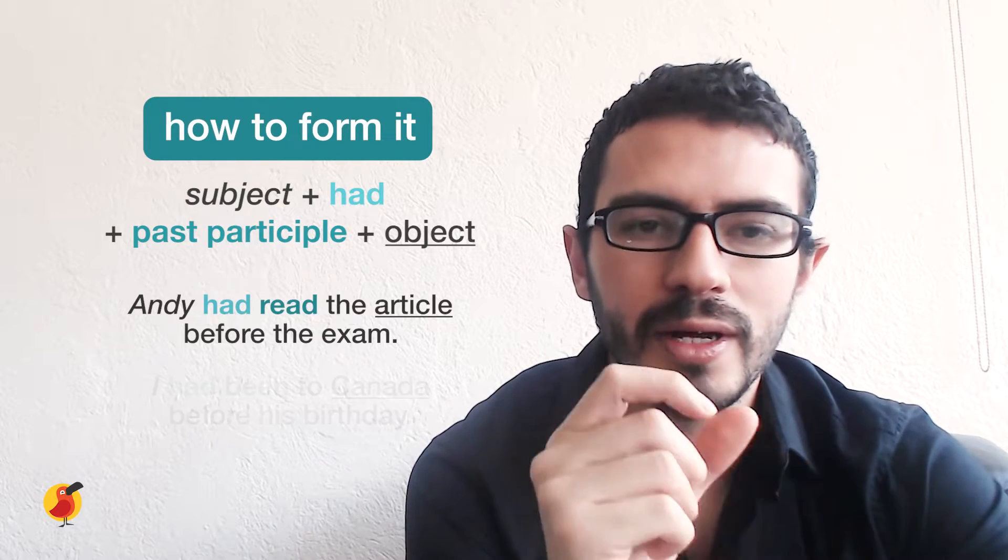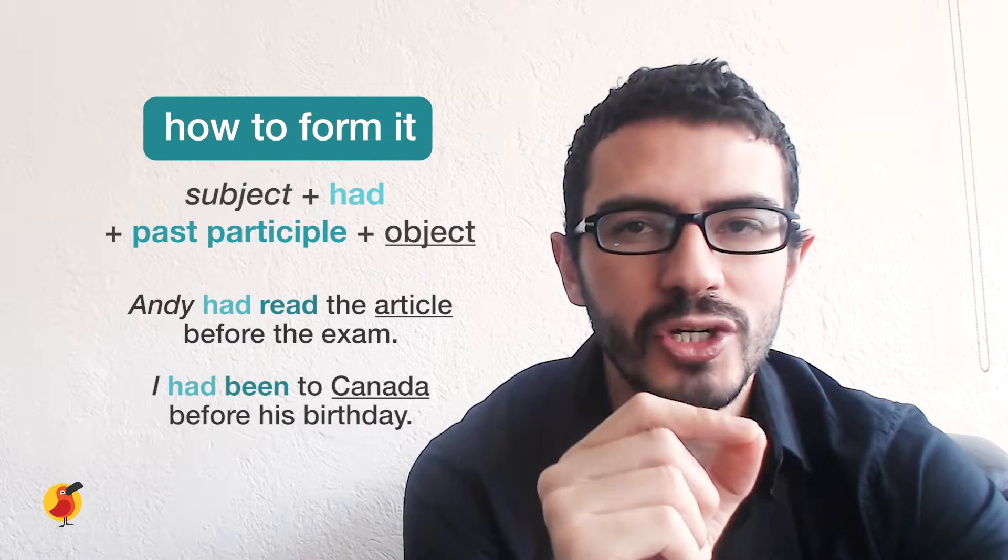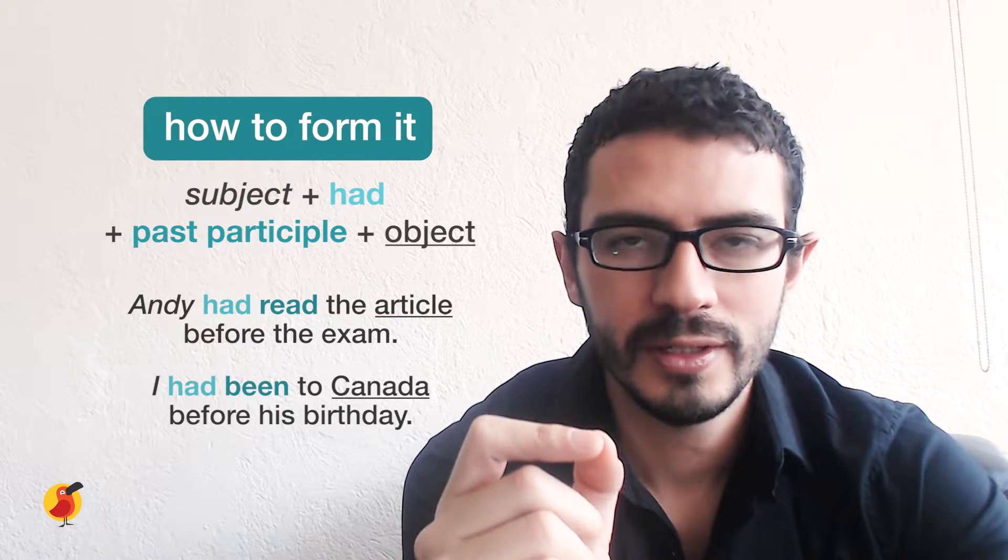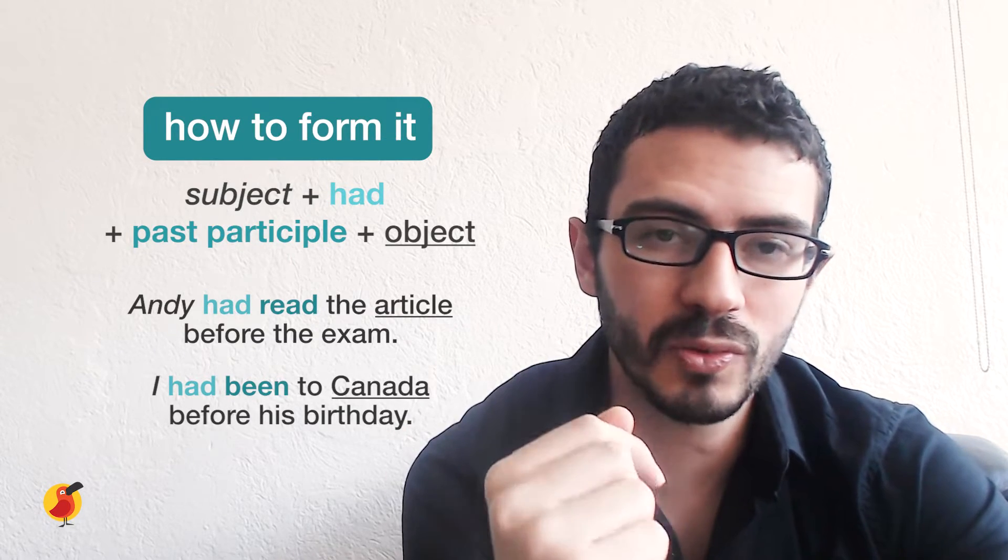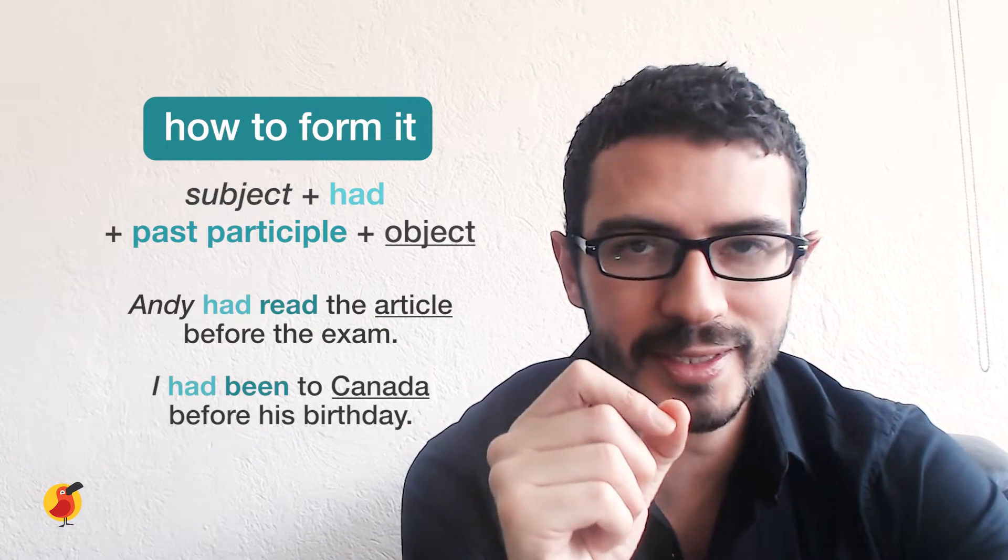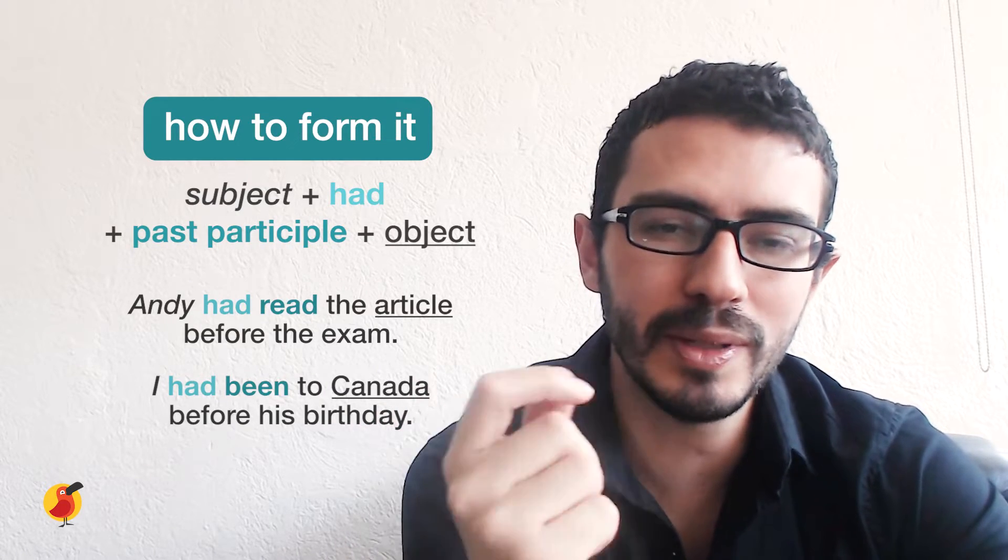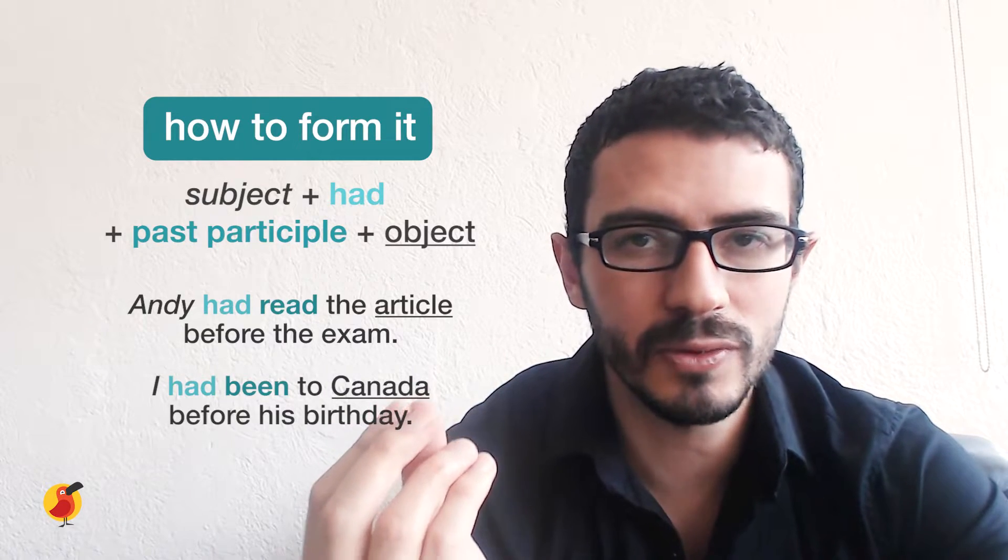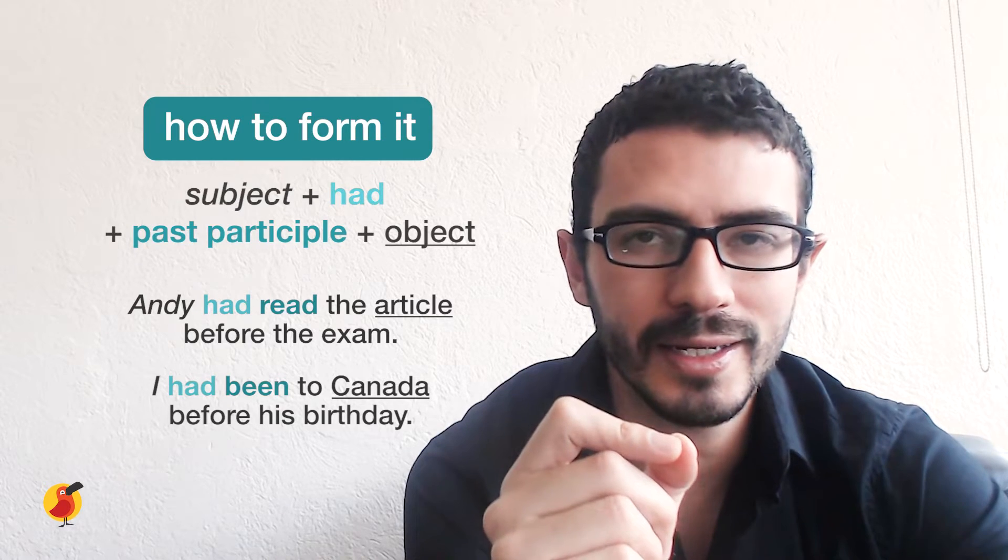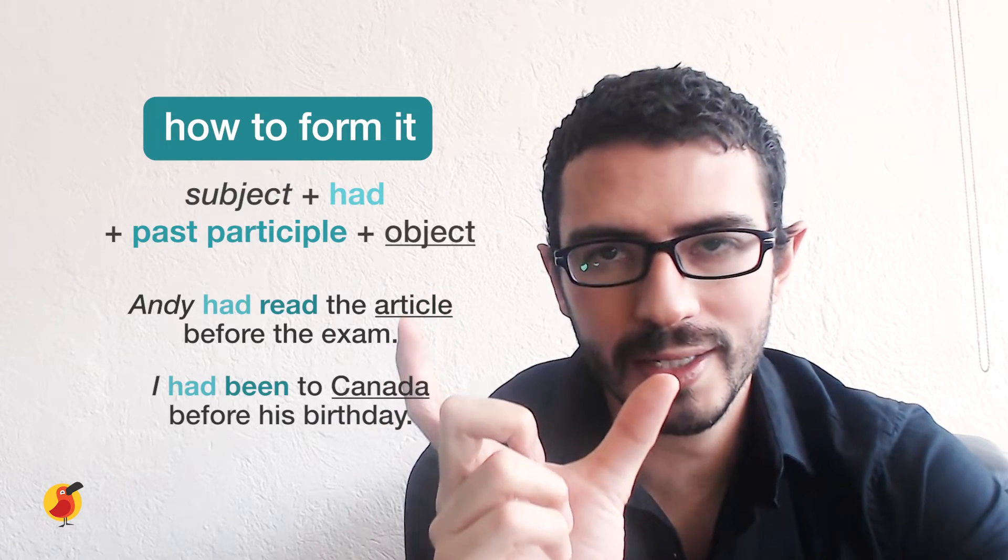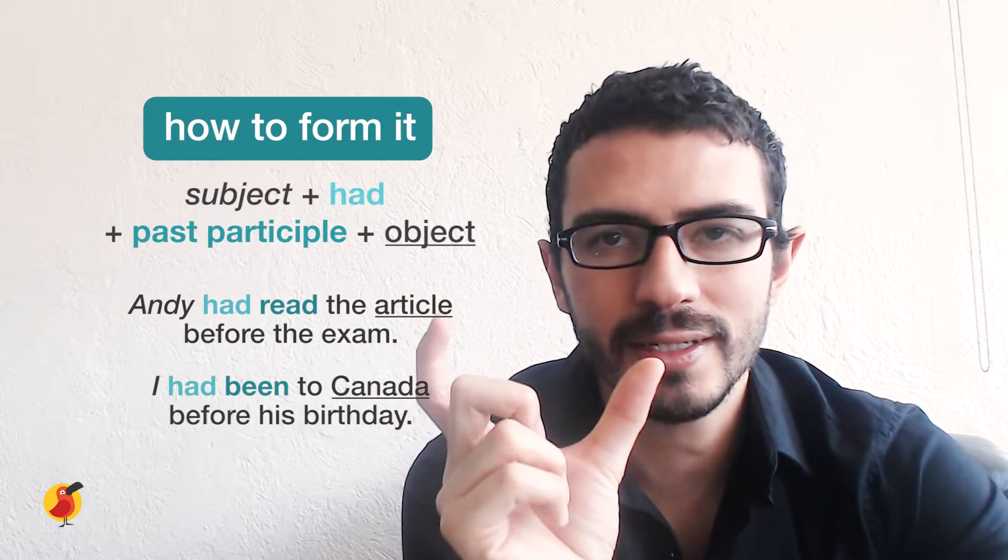Let's see another example. I had been to Canada before his birthday. So first we have the subject, which is I plus the had plus the past participle, which in this case would be been, and then the object, which is to Canada before his birthday. The two ideas that are going to get connected together.